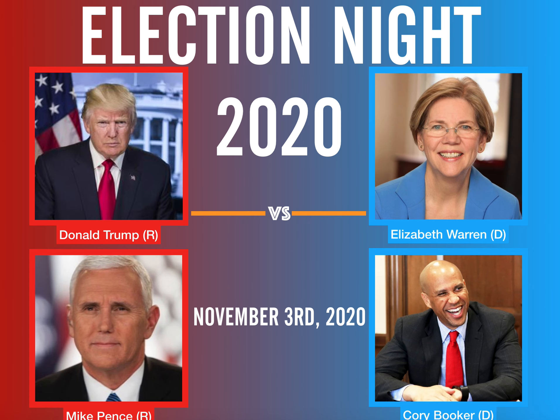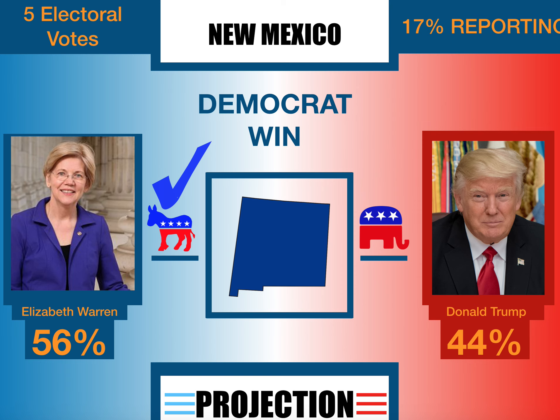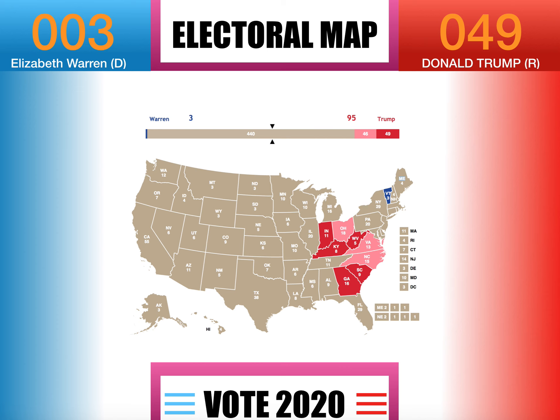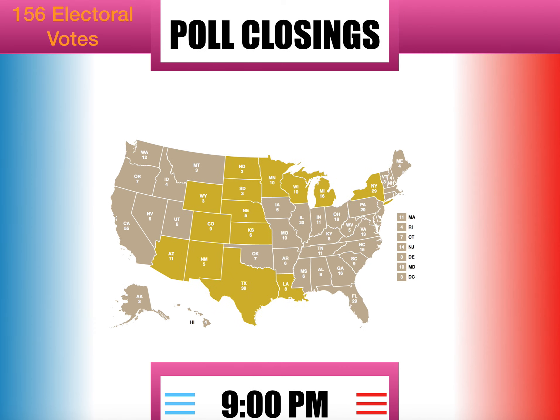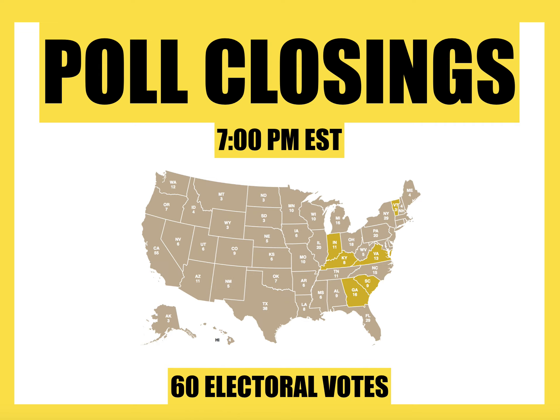Let's move on to the third format, which was my second-to-last format that I've been using. This is what it would look like for a Republican and Democratic win, and then in too close to call states it would look like that. The electoral map and the poll closings are included as well.